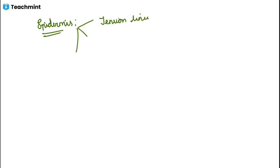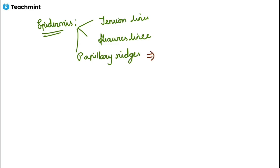Now let's cover particular details regarding the epidermis that can be asked in MCQs. In case of the epidermis, we have three different surface markings: tension lines, flexure lines, and papillary ridges. Mainly the papillary ridges have specific importance because they form the fingerprints. Our fingerprints are mainly based on the papillary ridges, so remember this.